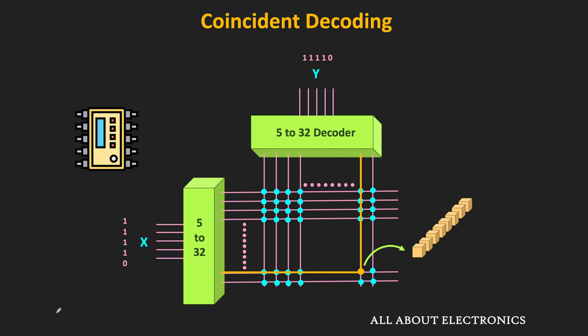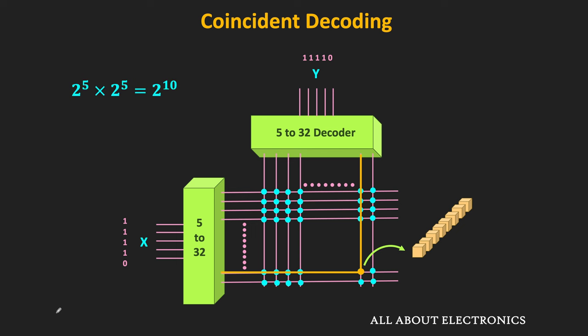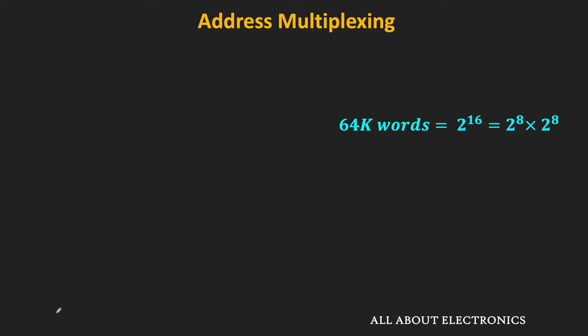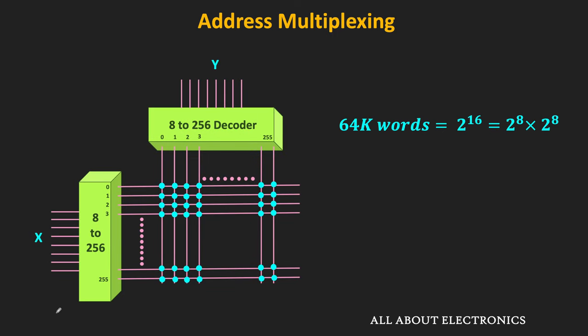Let us understand address multiplexing with an example. Consider a memory where the total number of words is 1024, equal to 2 to the power 5 times 2 to the power 5. Now suppose we have a memory with 64K words — 64K equals 2 to the power 16, which is 2 to the power 8 times 2 to the power 8. For coincident decoding, two 8-input decoders are required, needing 8 address pins for the row decoder and 8 more for the column decoder — 16 address pins total.